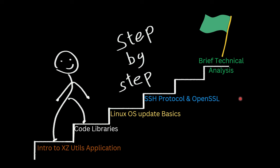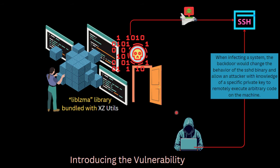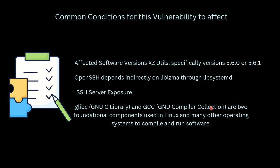Introducing the vulnerability: XZ Utils is the application and liblzma is the library it uses for its functionality. The liblzma library comes bundled with XZ Utils, and a backdoor — malicious code — was introduced into this library. This backdoor targets the SSH service on the Linux system and eventually manipulates its behavior to give the attacker remote code execution capability and authentication bypass.